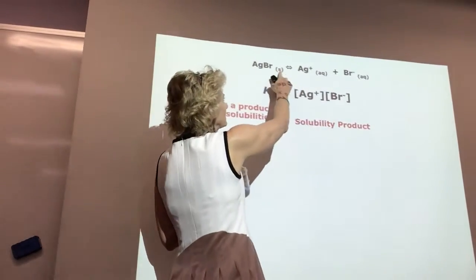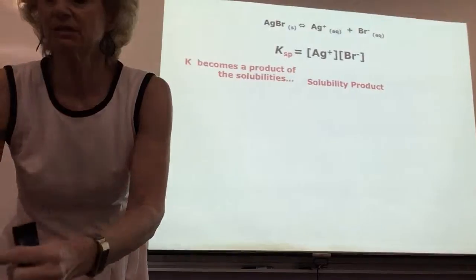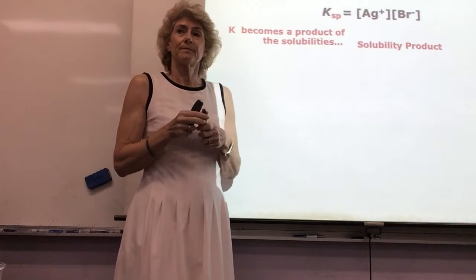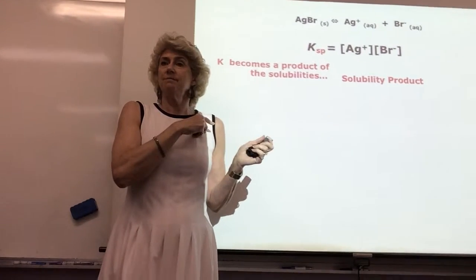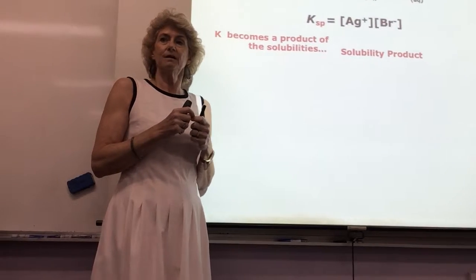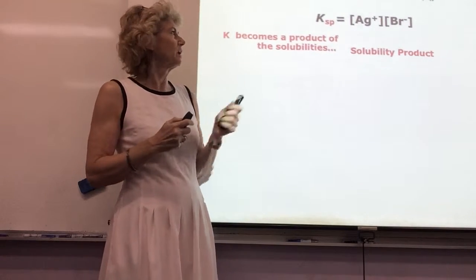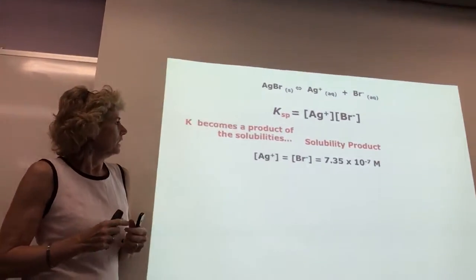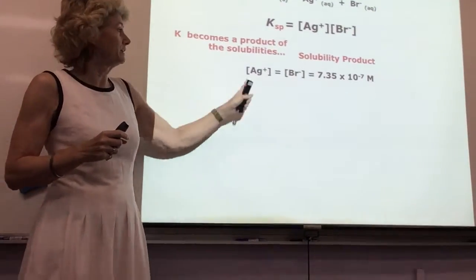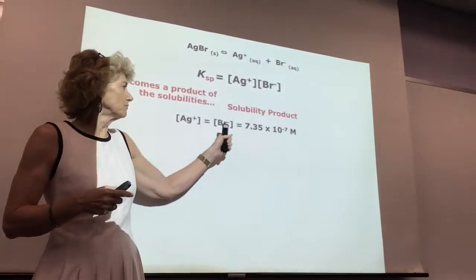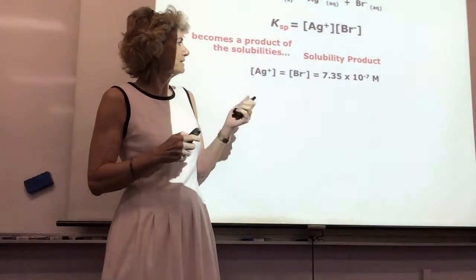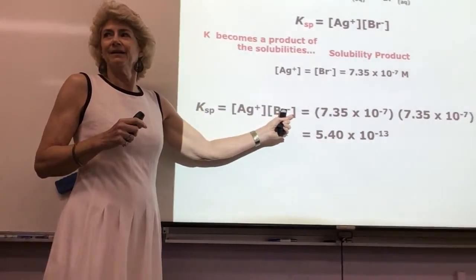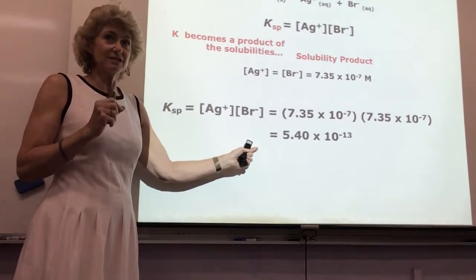The K for this is products over reactants, but there's no solid in our K expressions, so it's just the solubility product. For silver bromide, someone was able to find the concentrations at room temperature of the two ions: 7.35 × 10⁻⁷. So the Ksp is just that squared. That's how easy this chapter is — there's just one little thing: coefficients are raised as exponents.